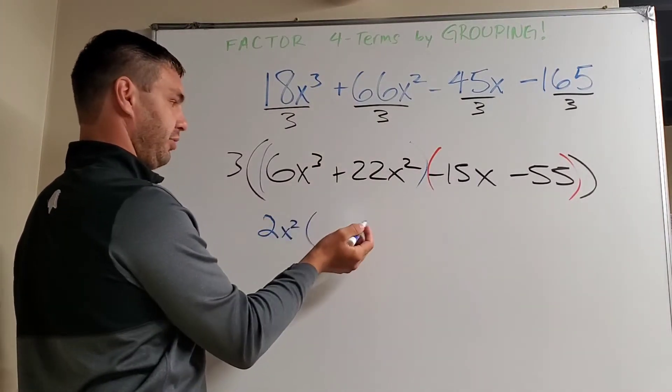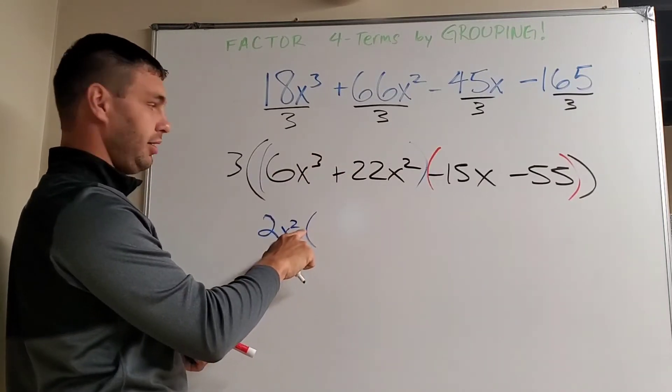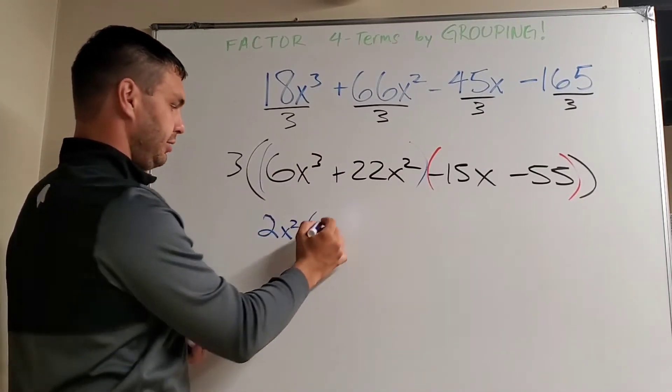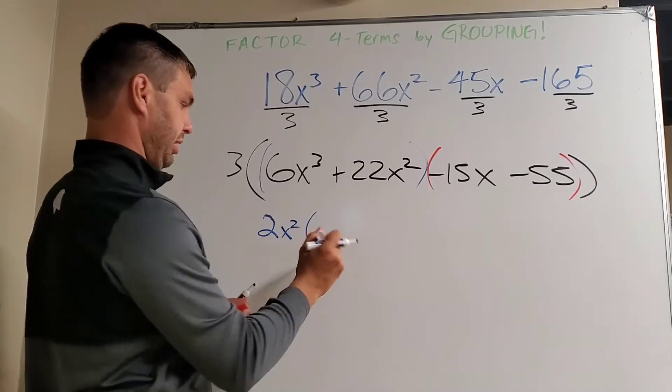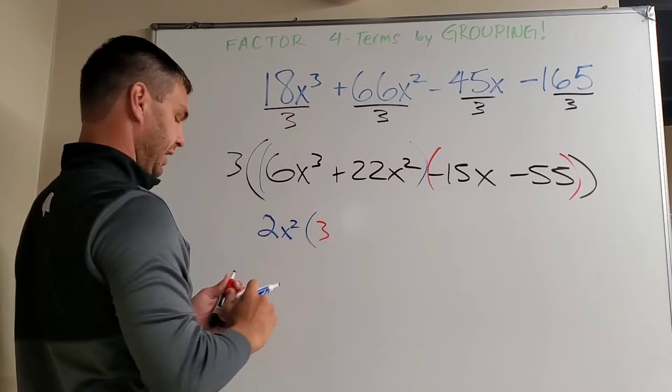And then again, just like before, we're going to divide that. 6x to the 3rd divided by 2x squared. 6 divided by 2 is 3. And then x to the 3rd divided by x squared is just x.